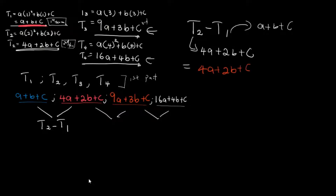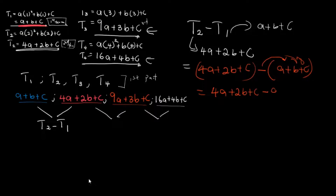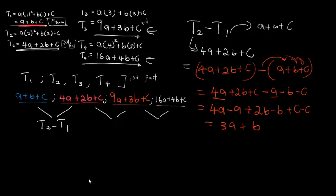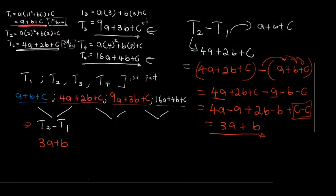Distributing the negative sign: 4a + 2b + c − a − b − c. Collecting like terms: 4a − a gives 3a, 2b − b gives b, and c − c = 0. So the first difference T2 − T1 = 3a + b.